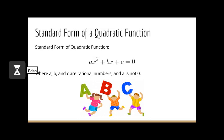Before we learn the three methods for solving quadratic equations, let's go over the standard form of a quadratic function. The standard form of a quadratic function is ax squared plus bx plus c equals zero, where a, b, and c are rational numbers, and a is not zero. When you write this down, circle it, bold it, underline it — do whatever you need to do, because the standard form of a quadratic equation is very important to know.